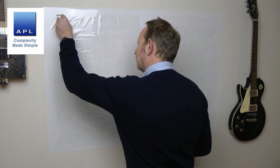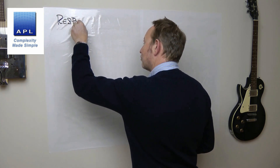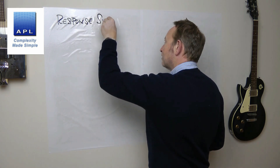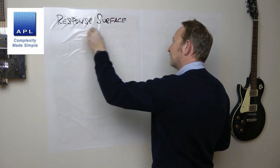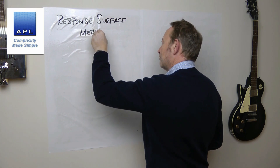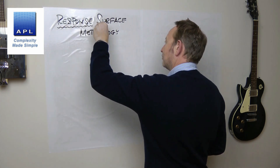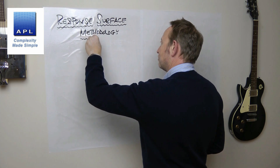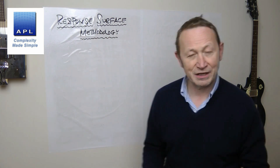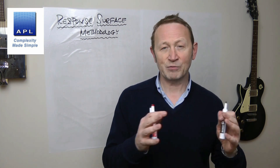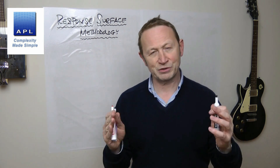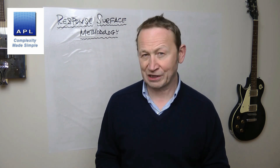It's a DOE technique, often known as RSM — Response Surface Methodology. It is still referred to and used today, but this is quite an old-fashioned technique. We're going to talk about why it was developed, and essentially how it was used back in the 1950s and 1960s especially.